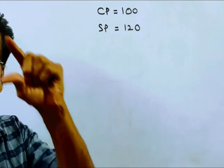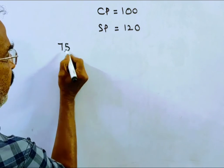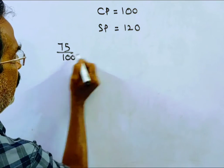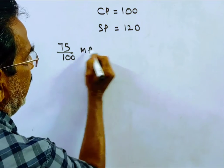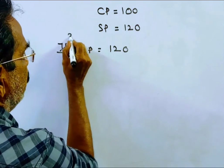75% of market price equals 120. So market price calculation: 25 threes, 25 fours, 3 ones, 3 forties...